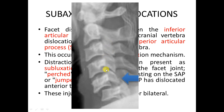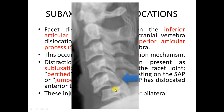What is the normal orientation of the facet? The inferior articular process of the cephalic vertebra is posterior to the superior articular process of the caudal vertebra — that is the normal orientation. In a dislocation, this is reversed: the inferior articular process of the superior vertebra becomes anterior to the superior articular process of the inferior vertebra.